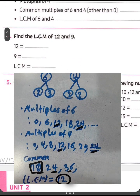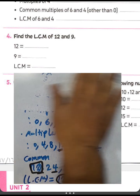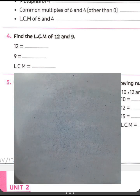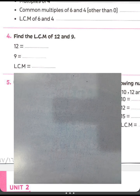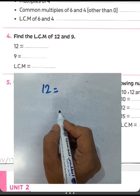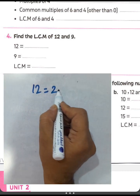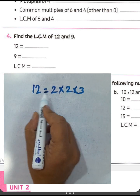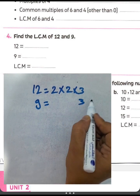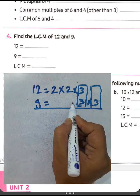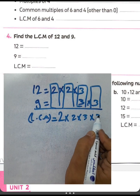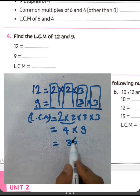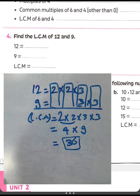Question number four: find the least common multiple of twelve and nine. Nine can't divide into twelve, so add twelve: twelve plus twelve equals twenty-four. Twenty-four can't divide by nine, so add twelve again: thirty-six. Thirty-six can be divided by nine, so thirty-six is the least common multiple of twelve and nine. By factorization: twelve equals two times two times three, and nine equals three times three. The least common multiple equals two times two times three times three, which is four times nine equals thirty-six.